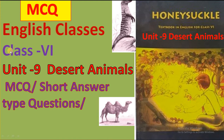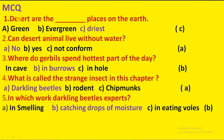Hello everyone, welcome to classes. This is Unit 9, Desert Animals of Class 6th — MCQ and short answer type questions. MCQ: Deserts are the best places on the earth — green, evergreen, or driest? Option C is correct: driest.